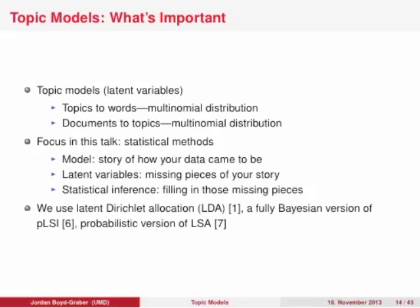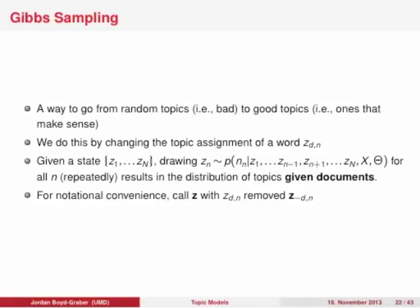We're going to try to uncover the latent variables in topic models using something called Gibbs sampling. This is a way to go from random, bad topics to good topics that actually make sense. We do this by changing the topic assignments of individual words, z_dn. Given all topic assignments, we change one word's topic, then do that for the next word, and the next, for all words in all documents, and then repeat. We call the set of all topic assignments with one word's assignment removed z_{-dn}.